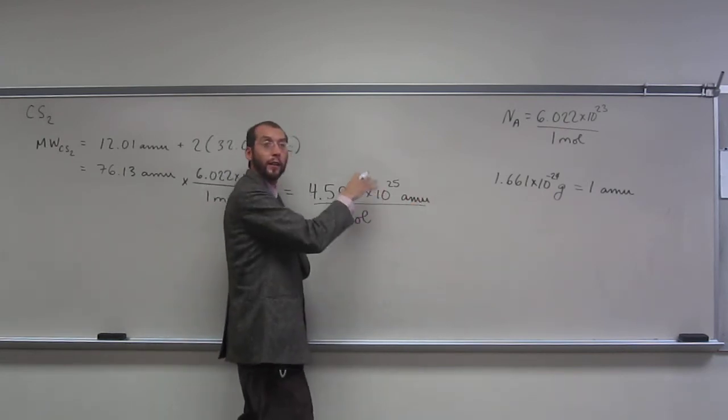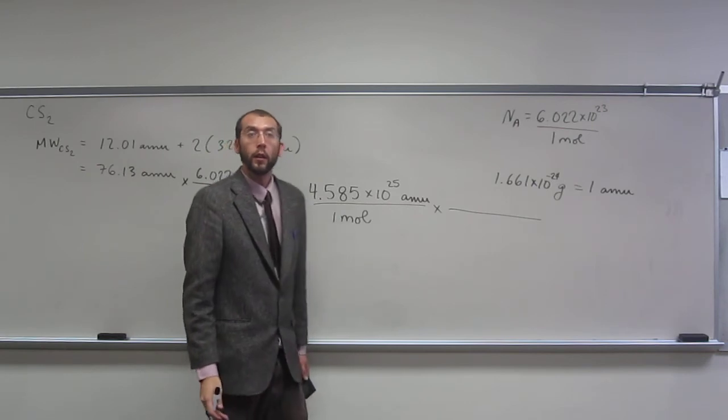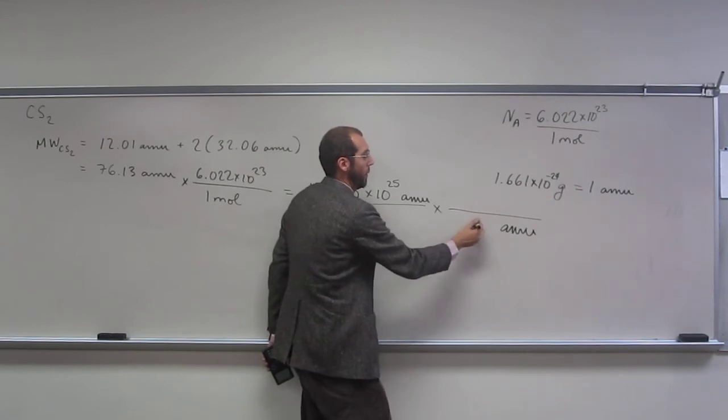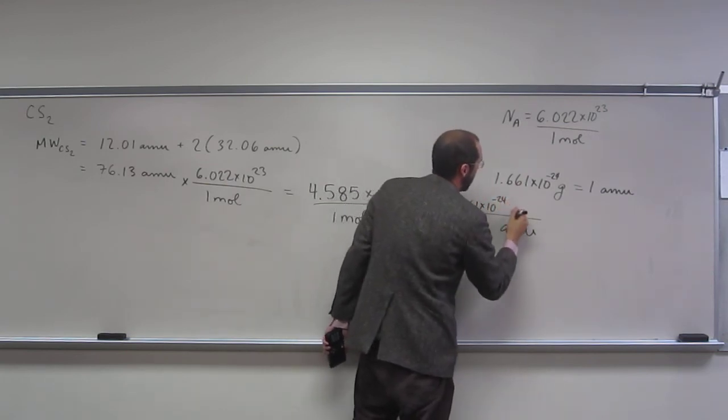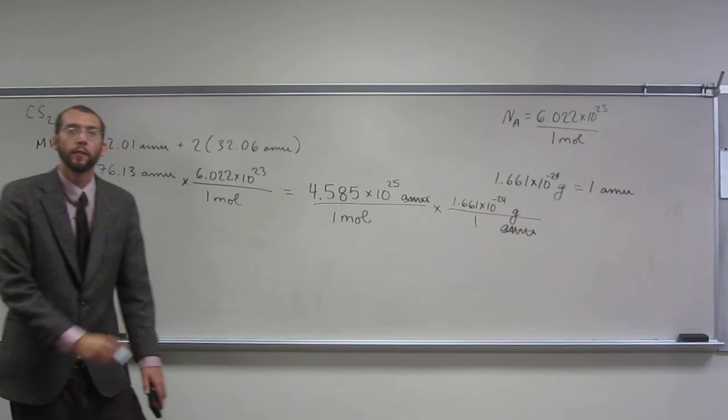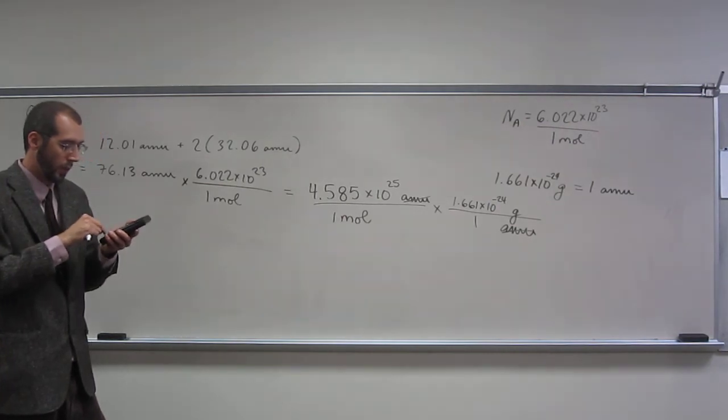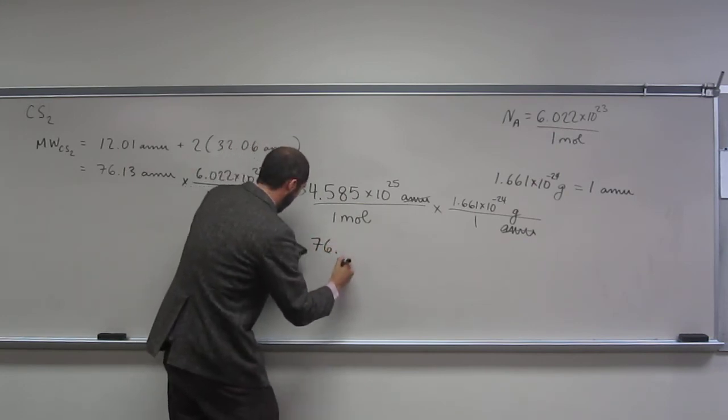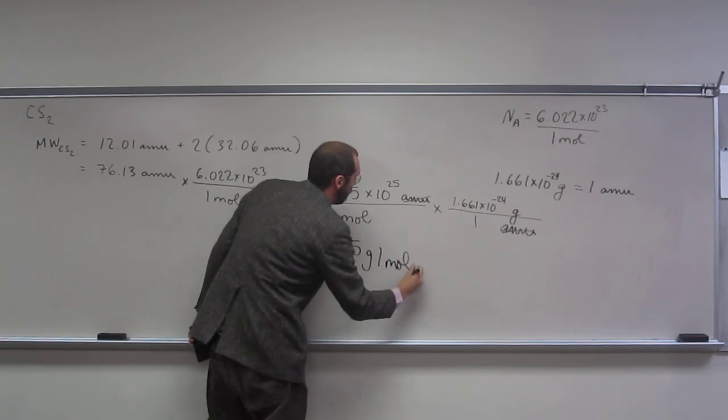So we've got a conversion here, right? So we want to take our AMUs to grams. So what are we going to put at the bottom here? AMUs. AMUs, right? And the number associated with those AMUs? 1. 1. And up here? 1.66. Yeah. Yeah. Very good. Right? So why don't I do that? So cancel, cancel. Hopefully everybody sees that. So I'm going to multiply this times this. 1.6618. And I get a number that is 76.15. And look at my units. Grams per mole.